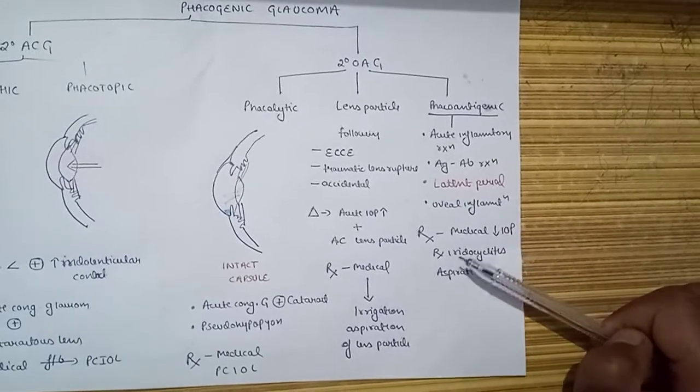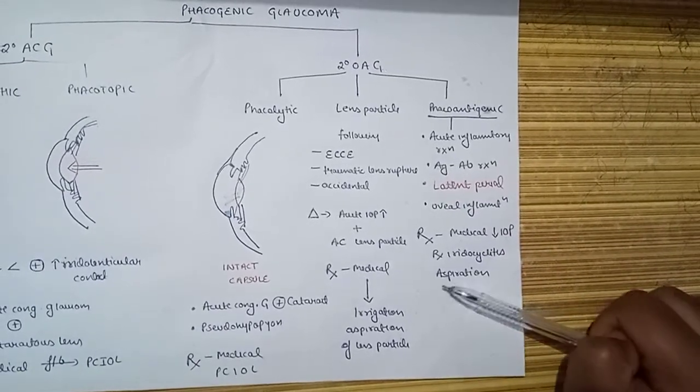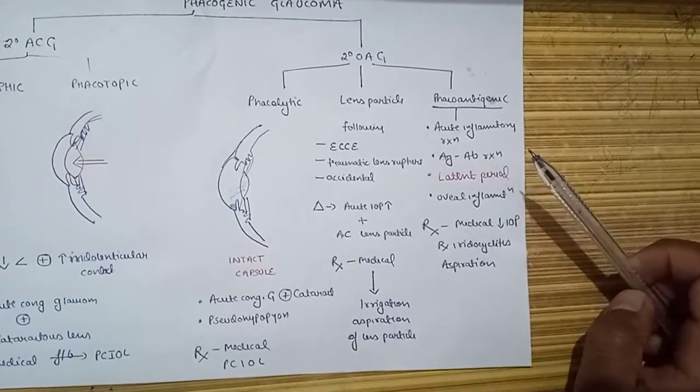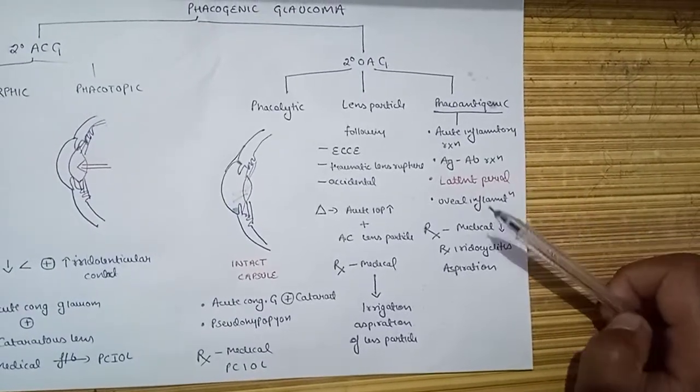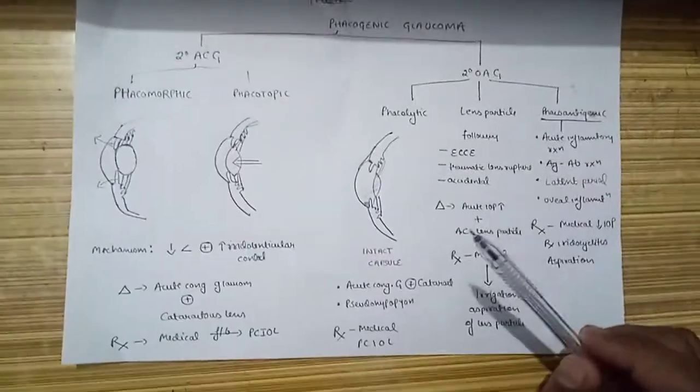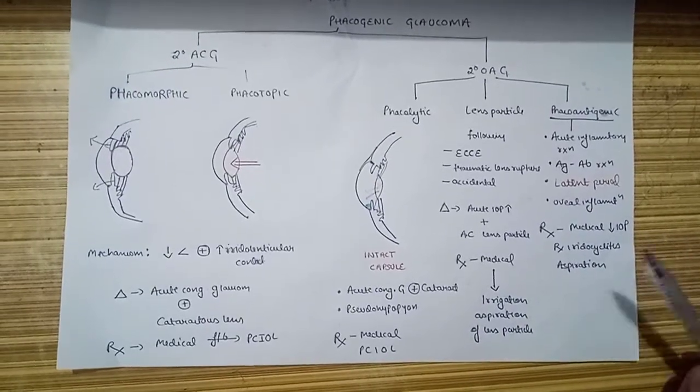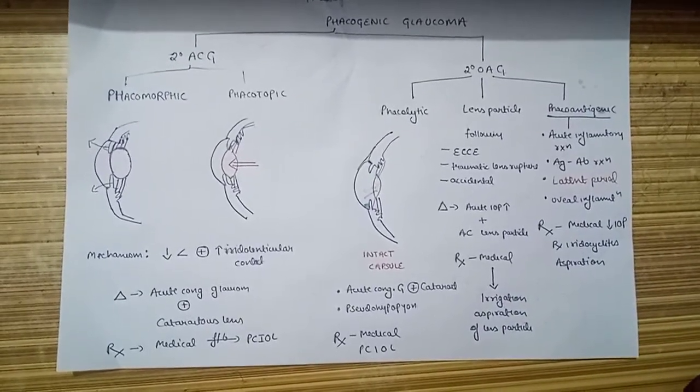Treatment here is medical to decrease IOP immediately, and later on we go for aspiration of the content. Plus, if there is uveal inflammation, we will give steroids and cycloplegics to control that. The medical management in these cases is immediate. This is what we should know about phacogenic glaucoma. Thank you.